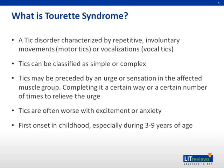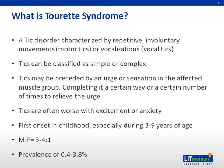The first onset is usually between the ages of 3 to 9 years. The male to female ratio is 3 or 4 to 1. The prevalence of Tourette's Syndrome is between 0.4 to 3 percent.